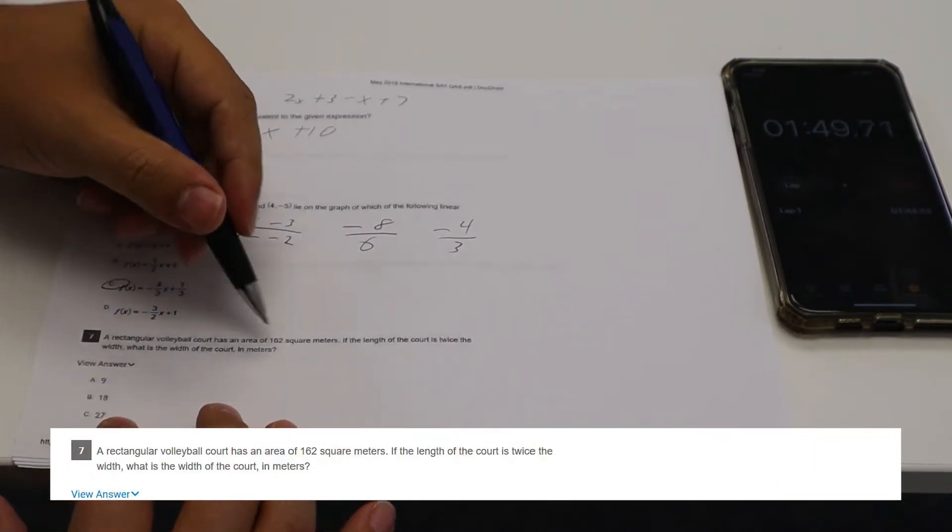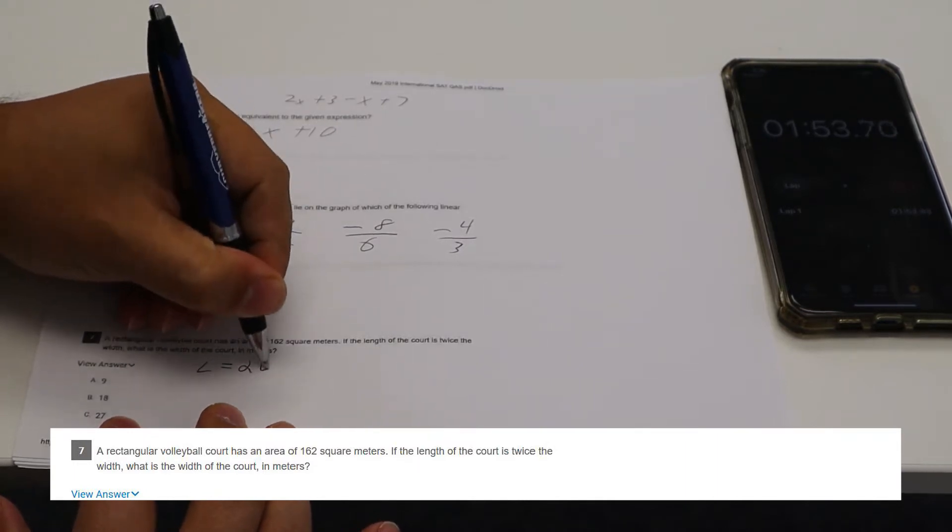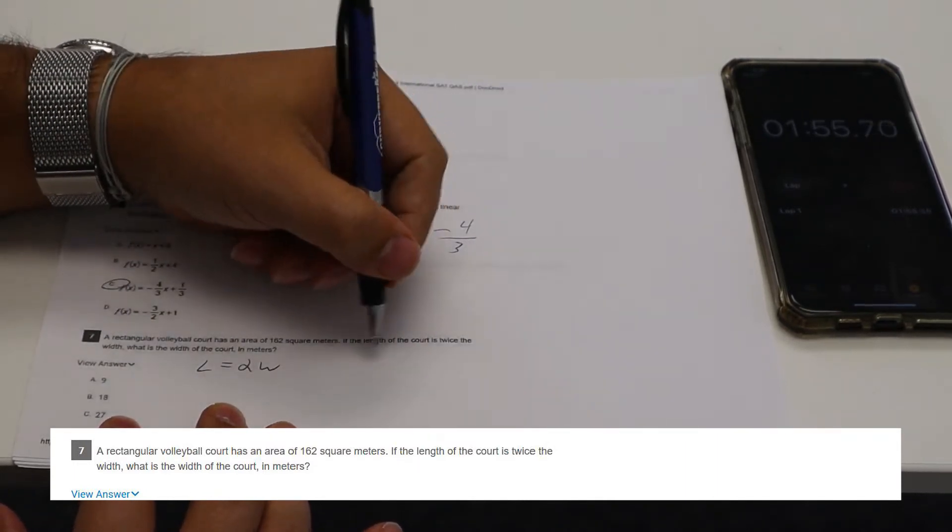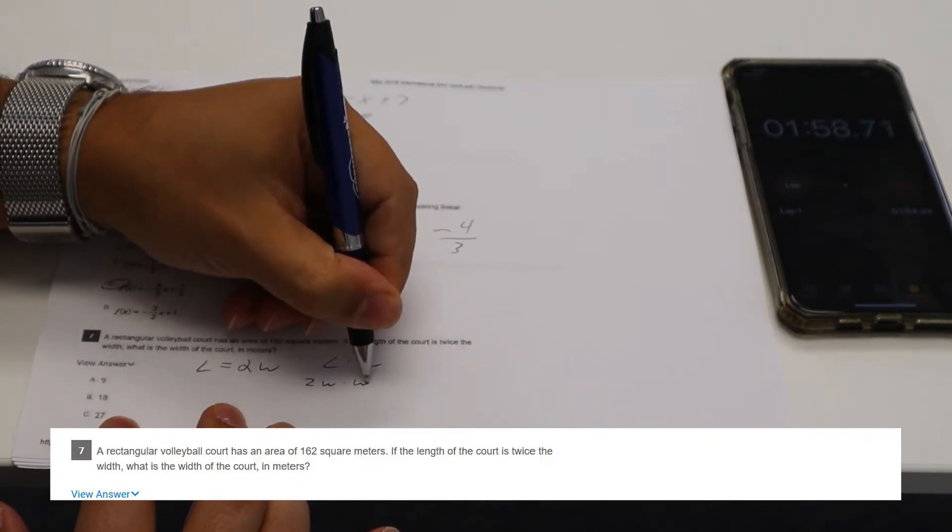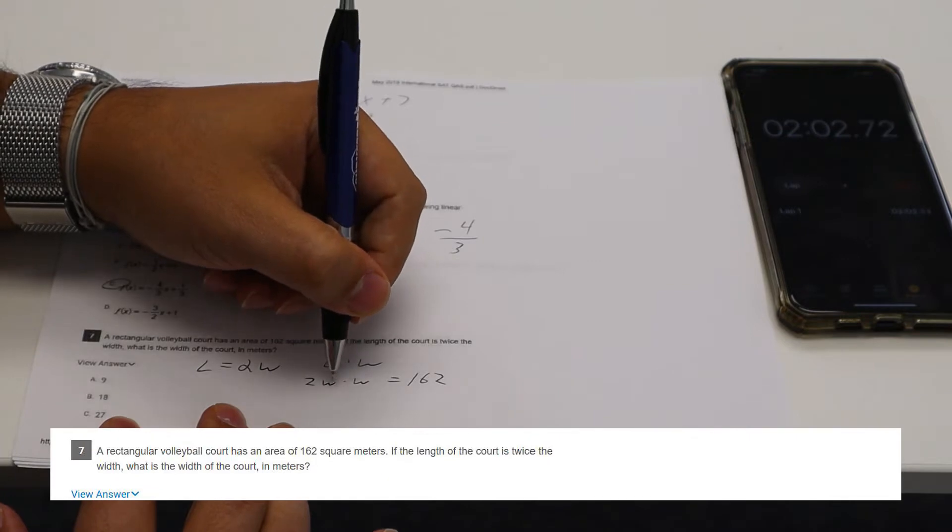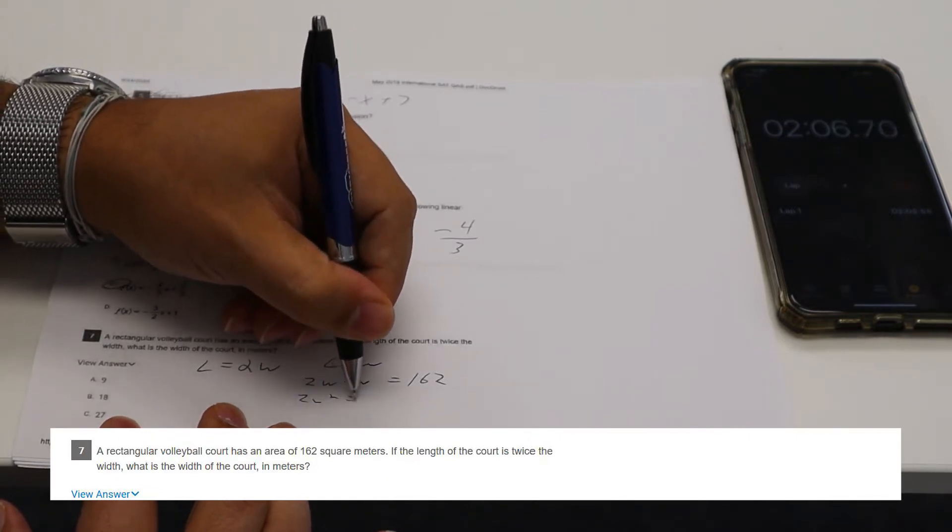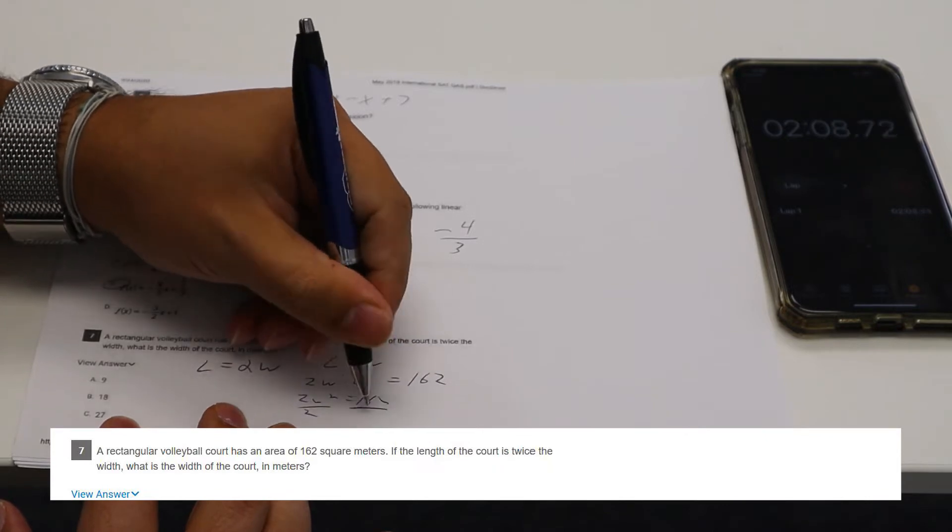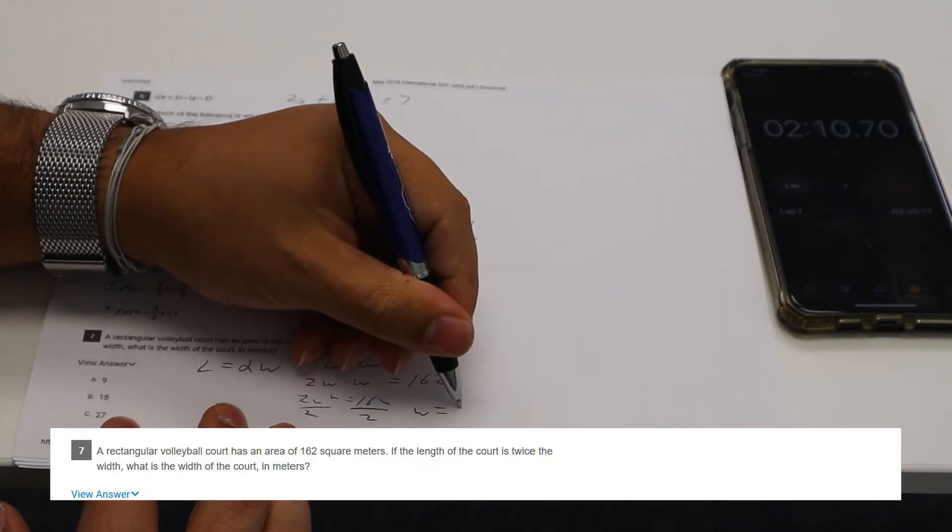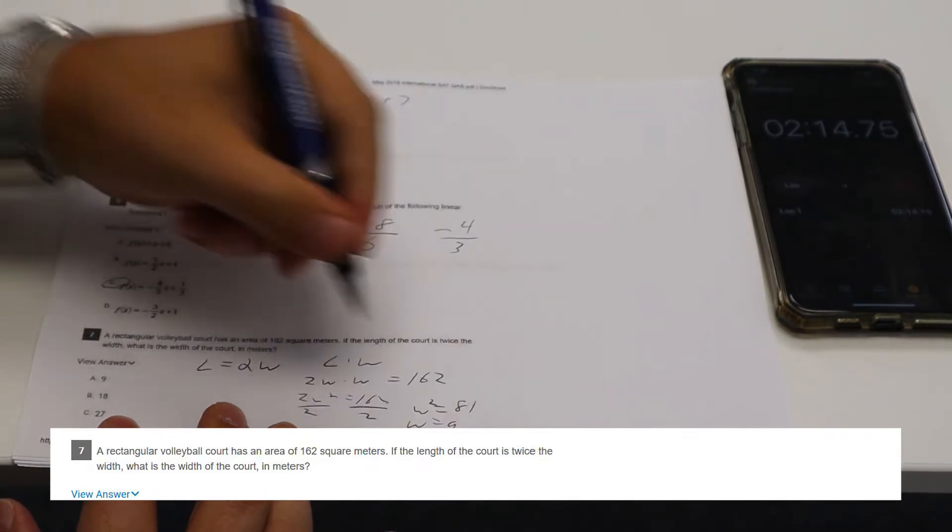Rectangular volleyball court has an area of 162. The length is twice the width. So length equals two W. Area is length times width. So two W times W equals 162. Two W squared equals 162 divided by two. W squared equals 81, excuse me. So W equals nine. Boom.